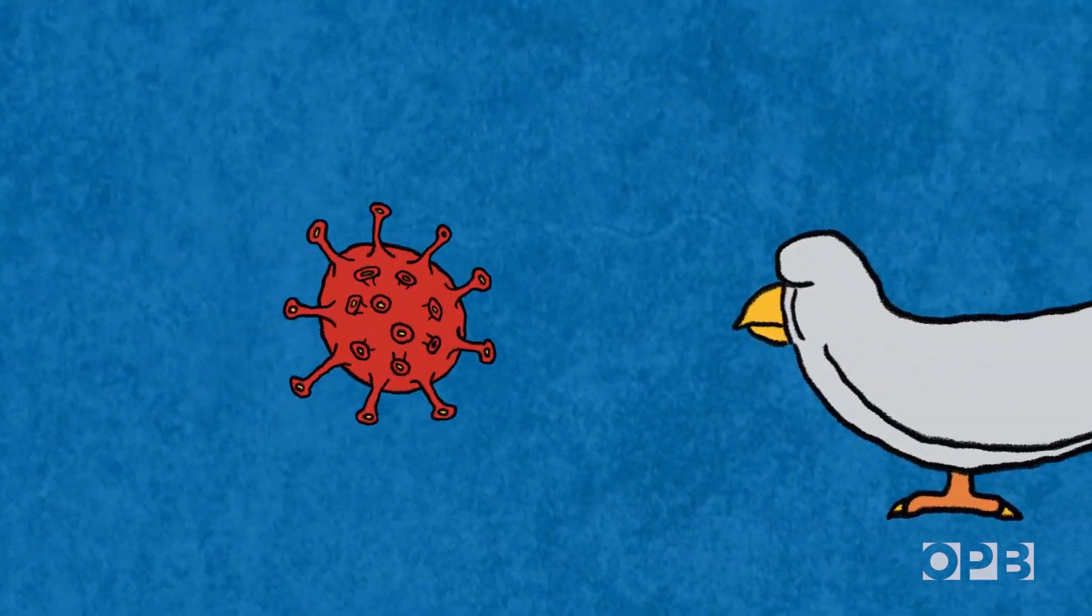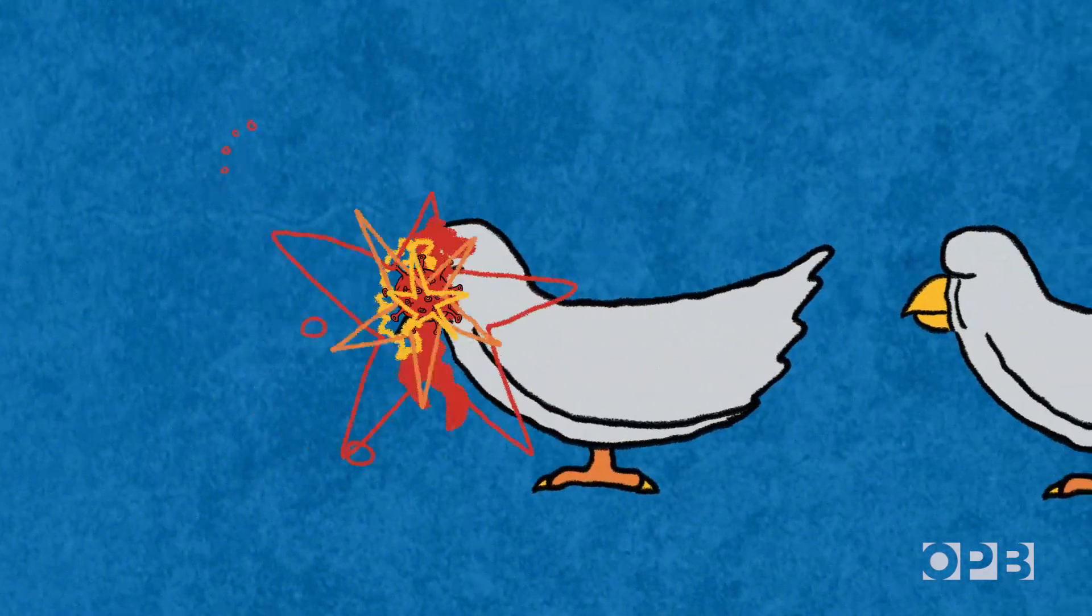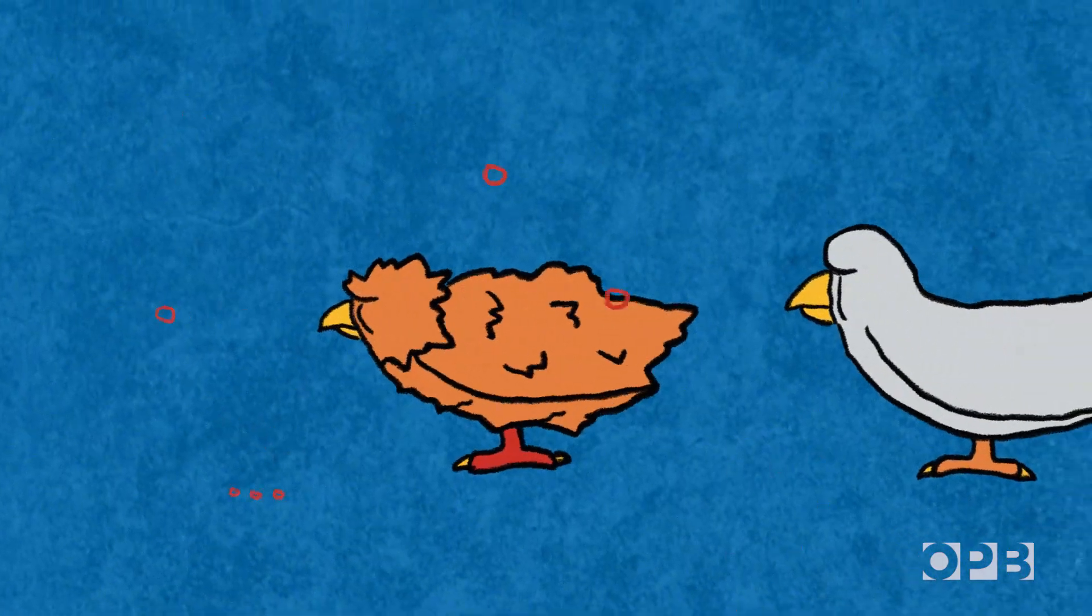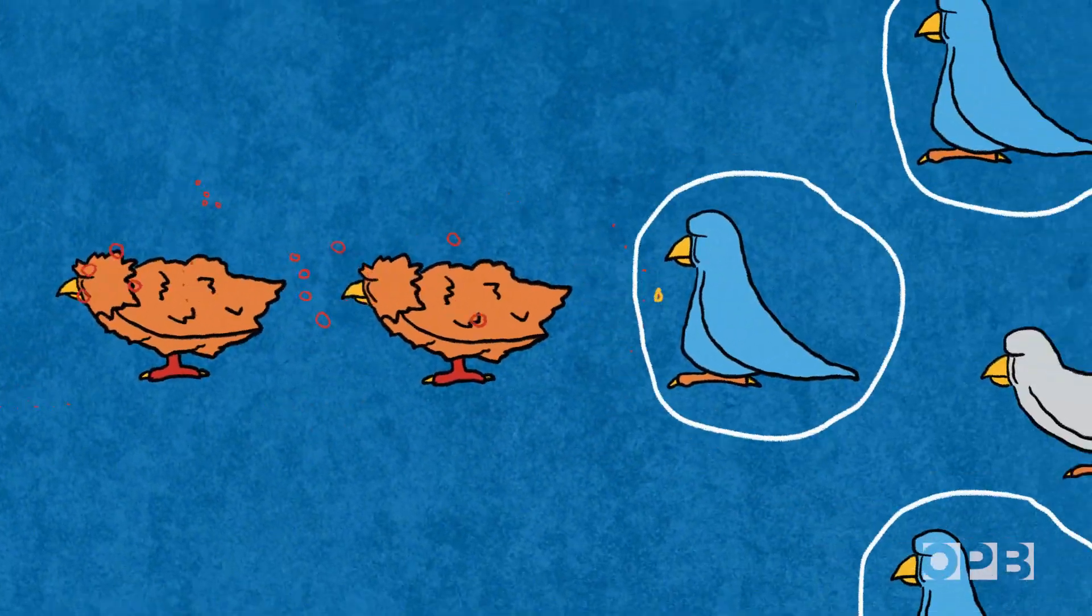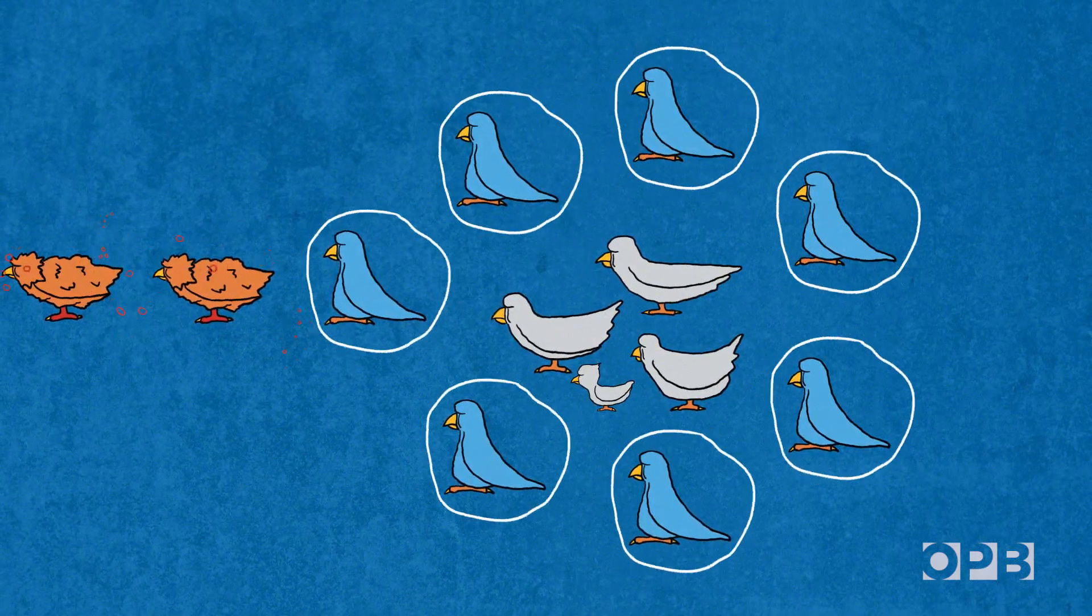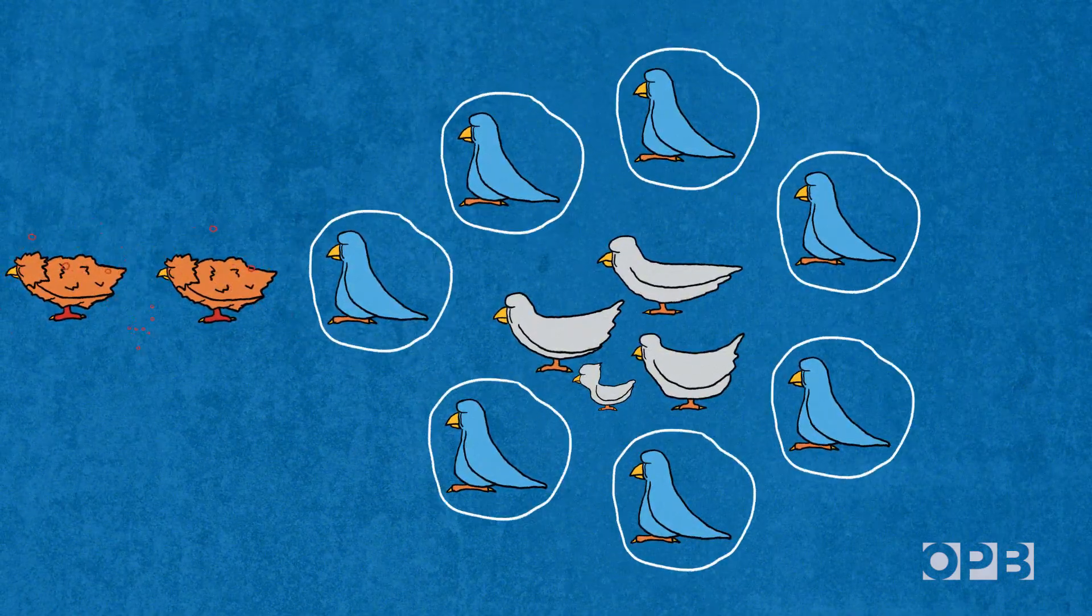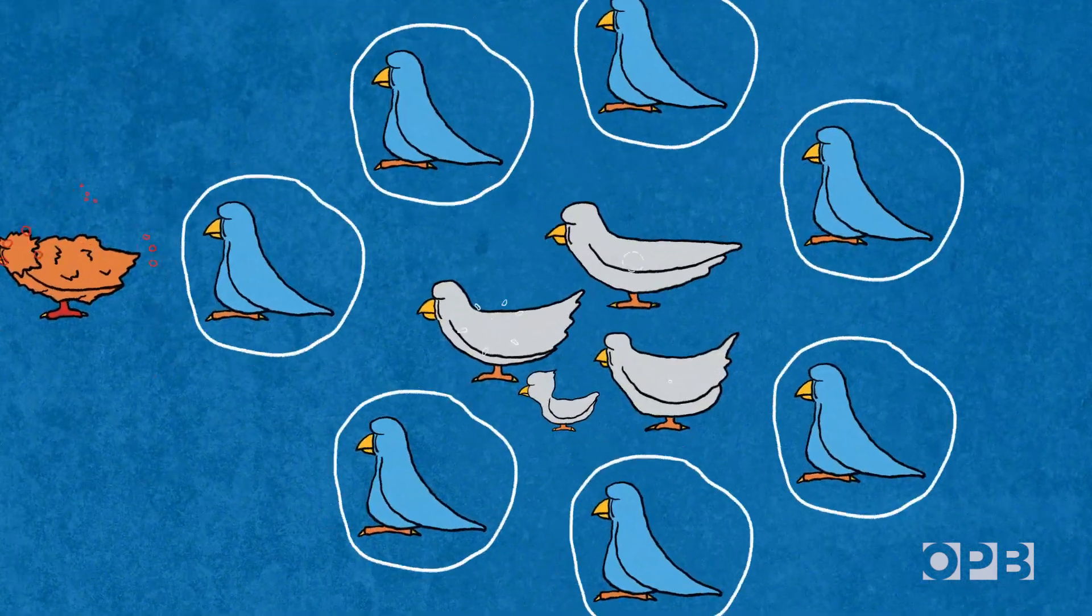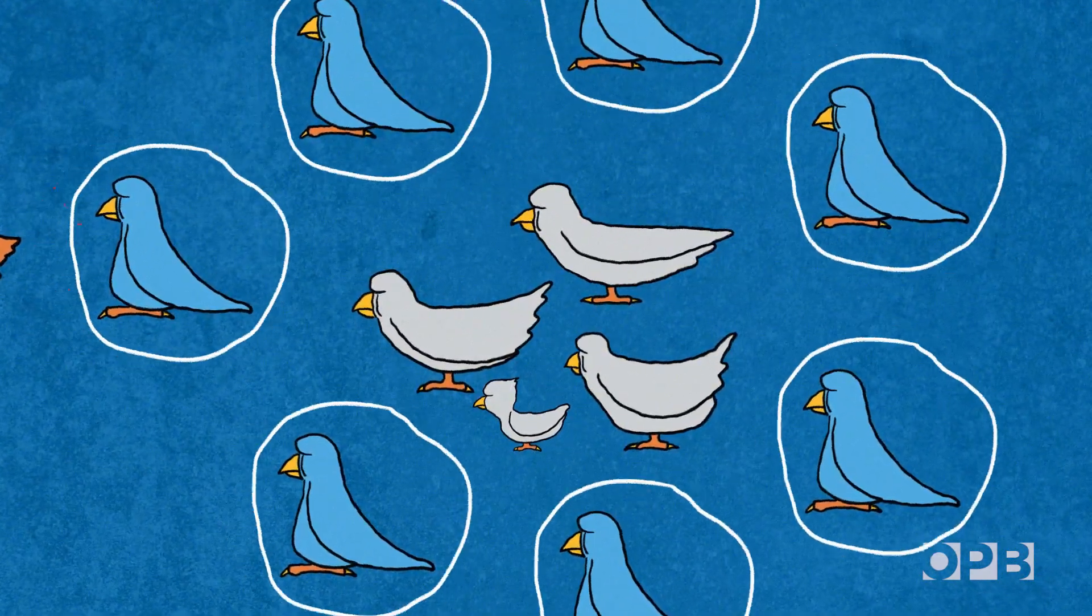The basic idea is pretty simple. In order to spread, viruses need to infect people. If enough people are immune, they create a sort of barrier that keeps a virus from finding new people to infect, and in the process, protects people who aren't immune. That's herd immunity.